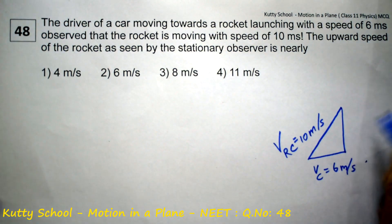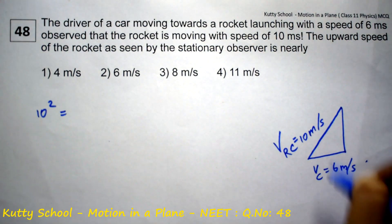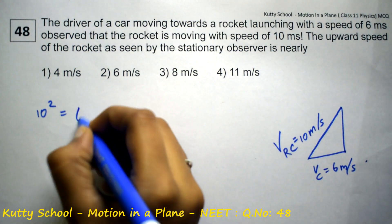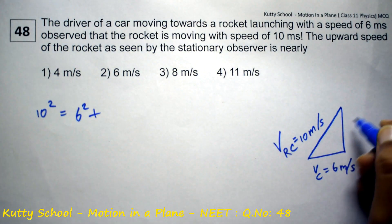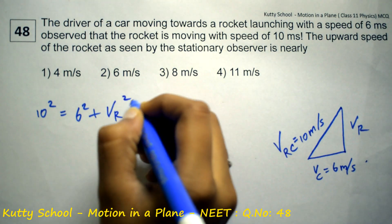It is by Pythagoras theorem. 10 square is equal to 6 square plus velocity of rocket square.